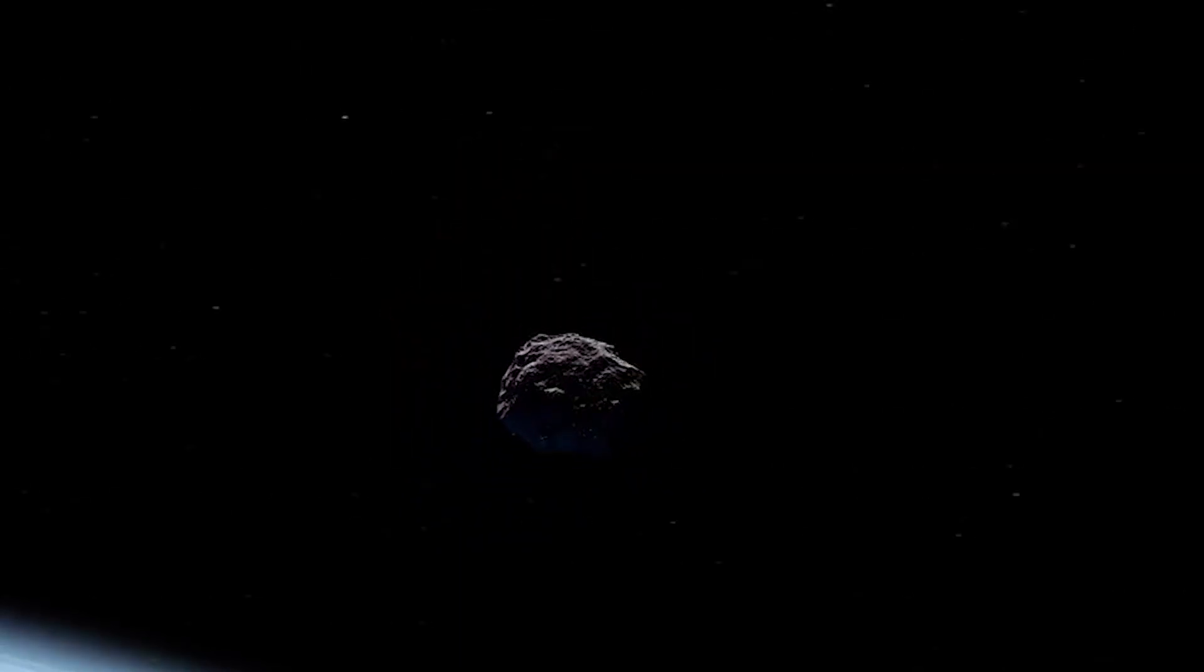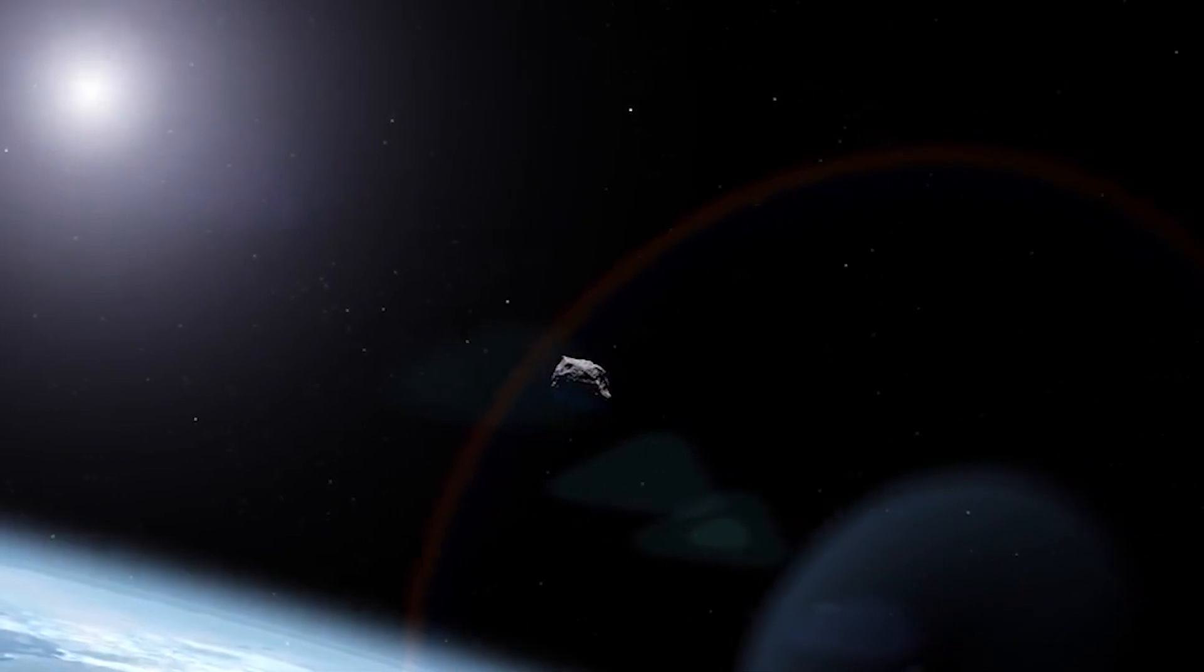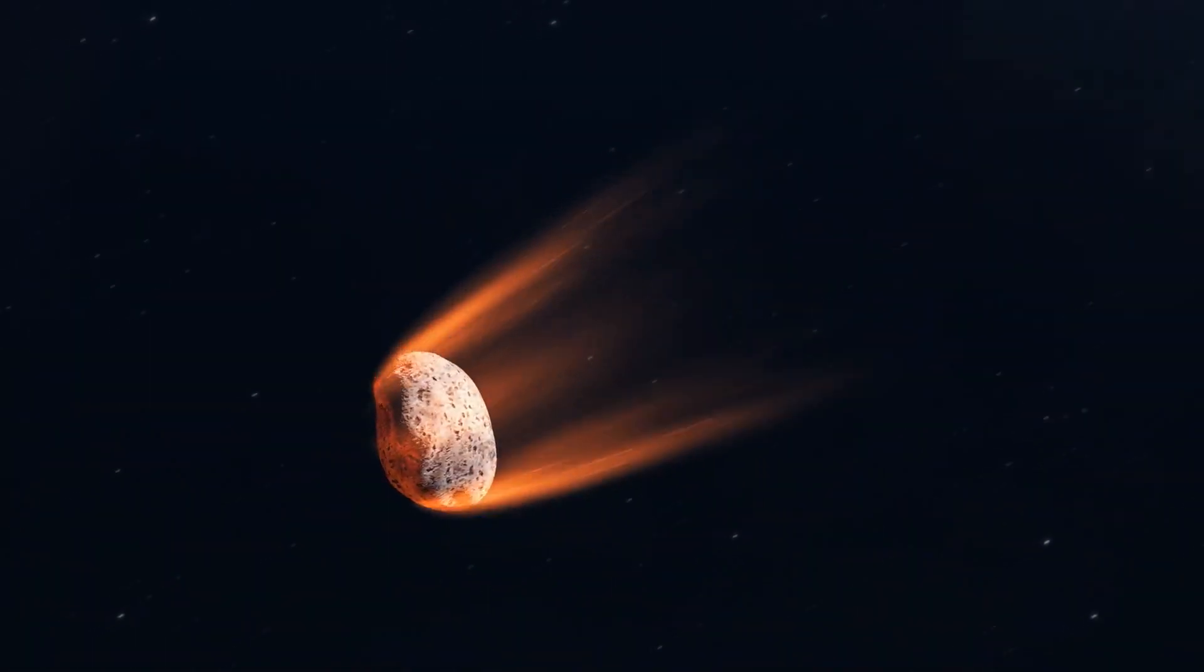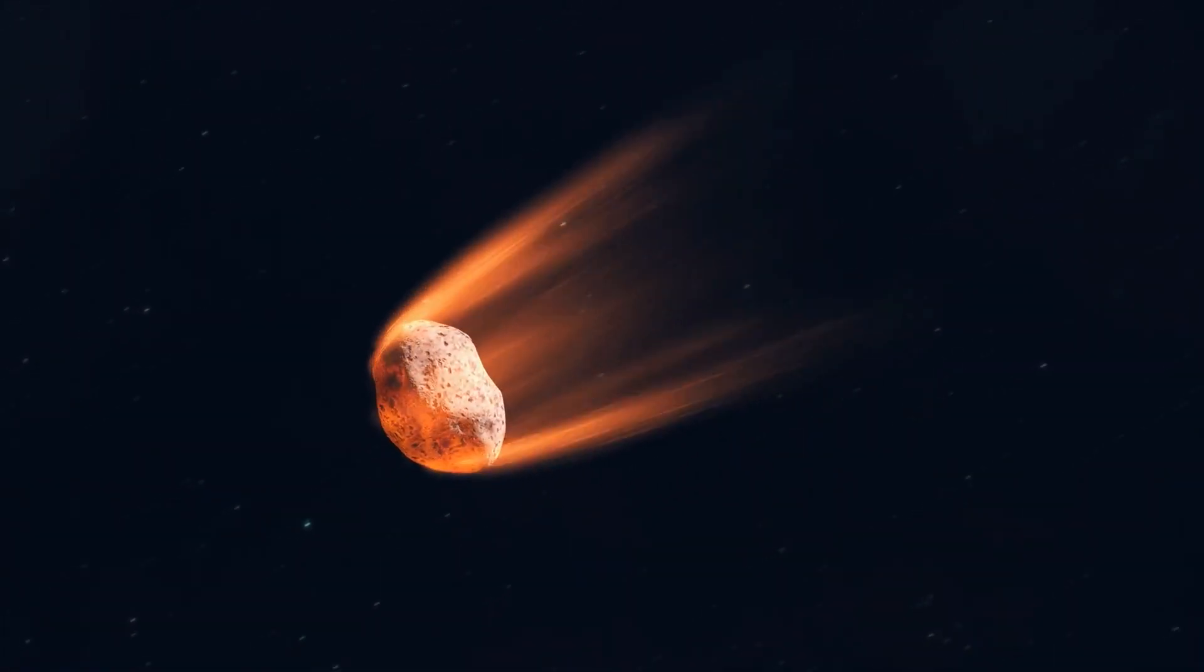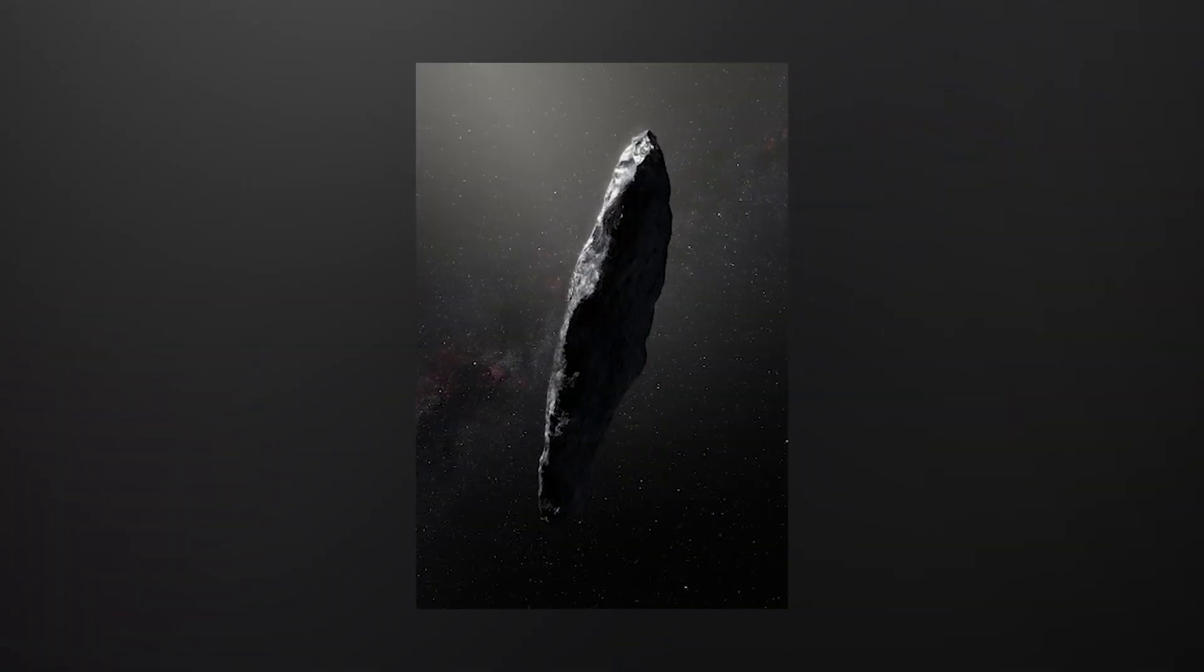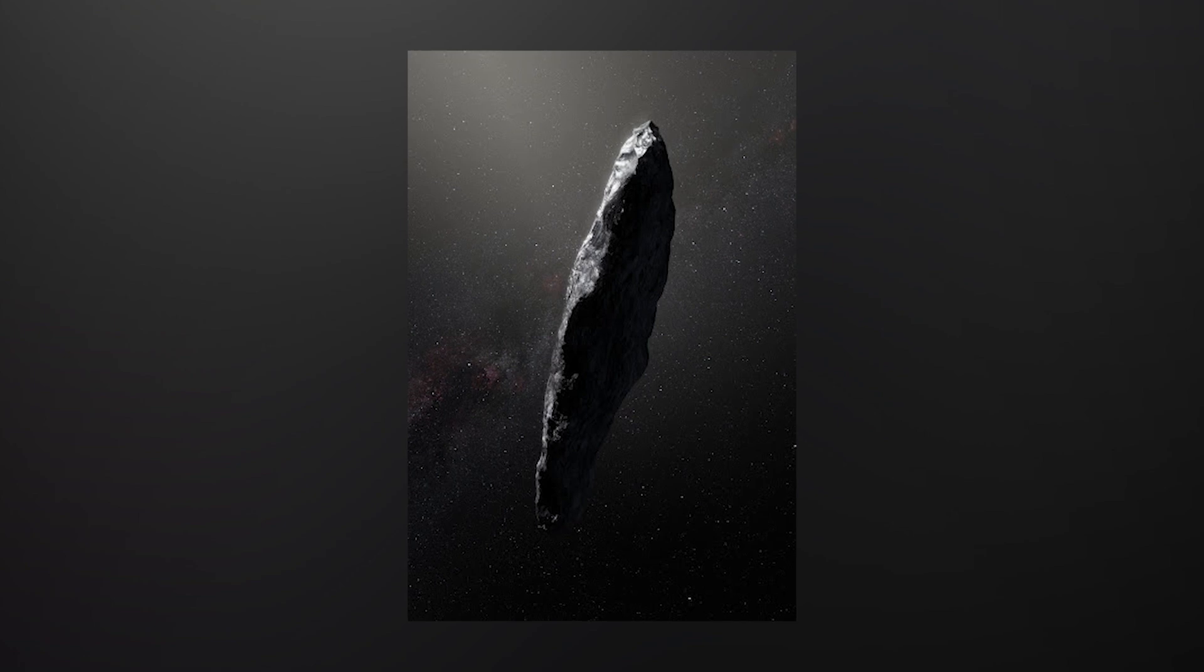The object's speed soared to 87 kilometers per second, about three times faster than the average comet in our solar system. This anomaly led scientists to rethink their initial classification of Oumuamua as an asteroid, sparking new theories.